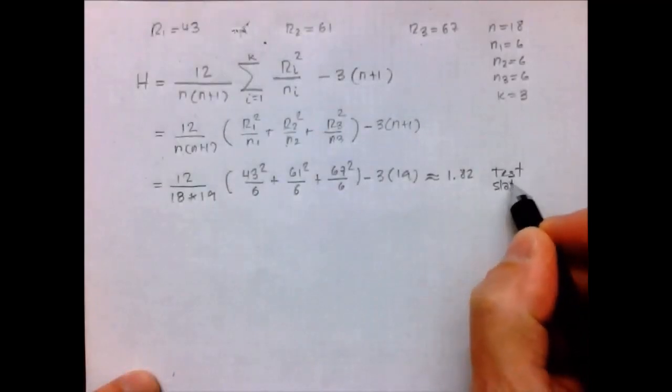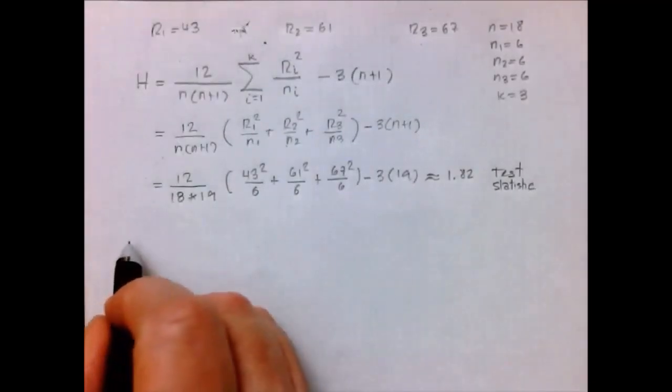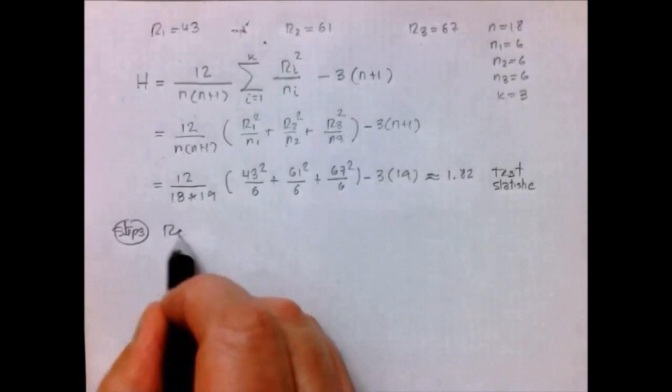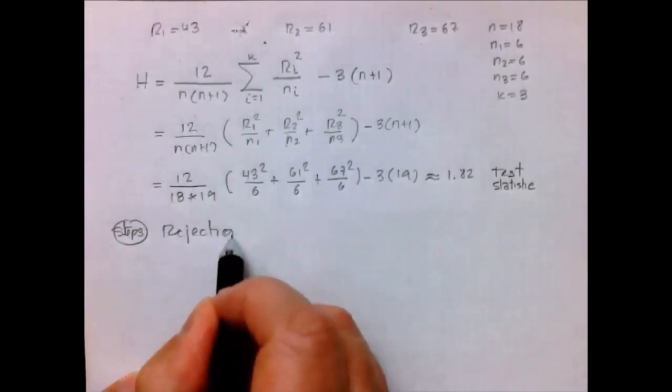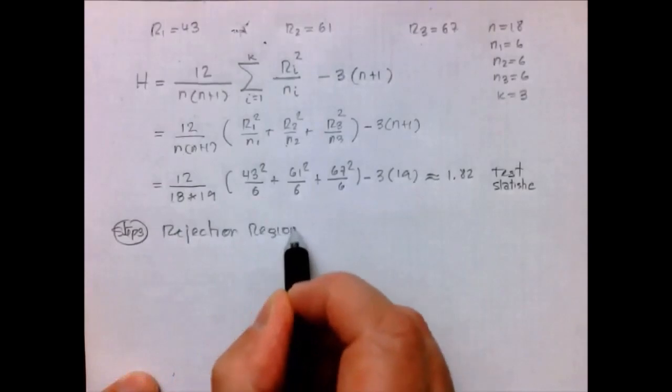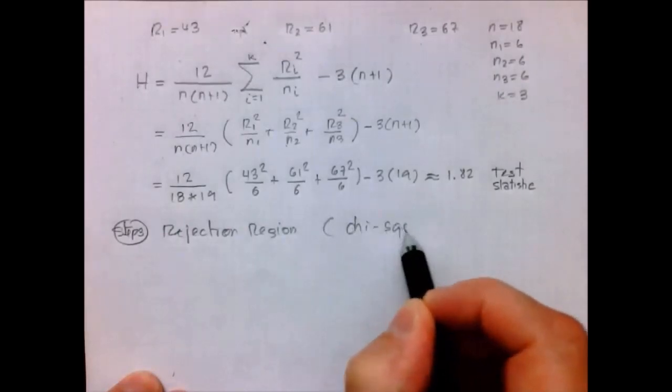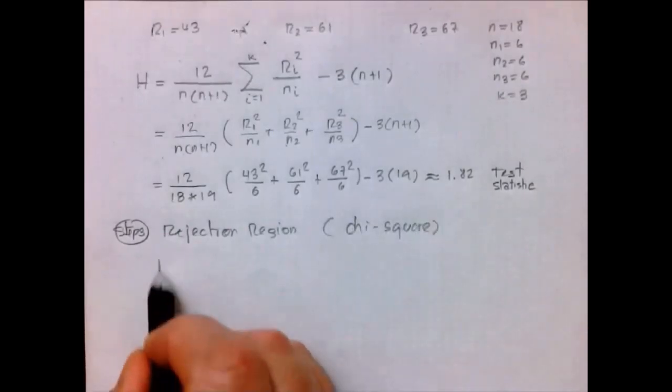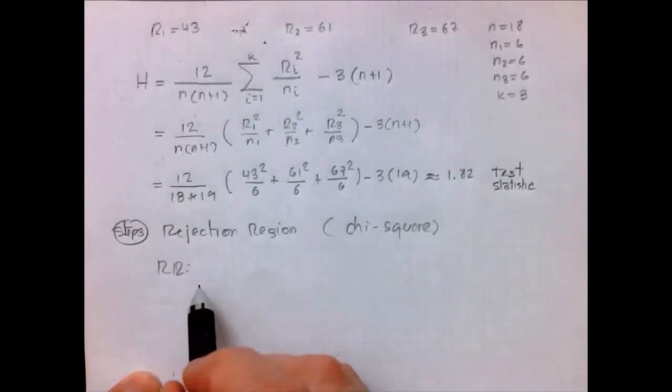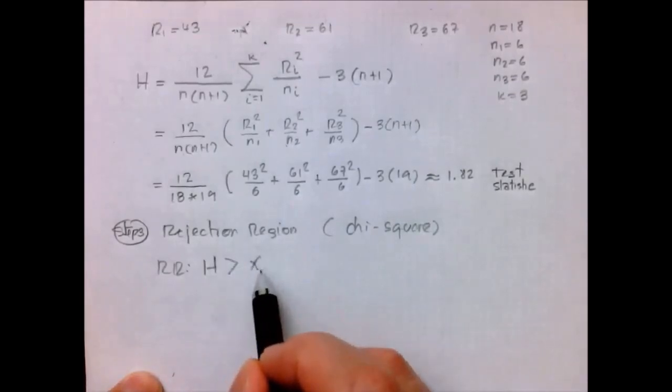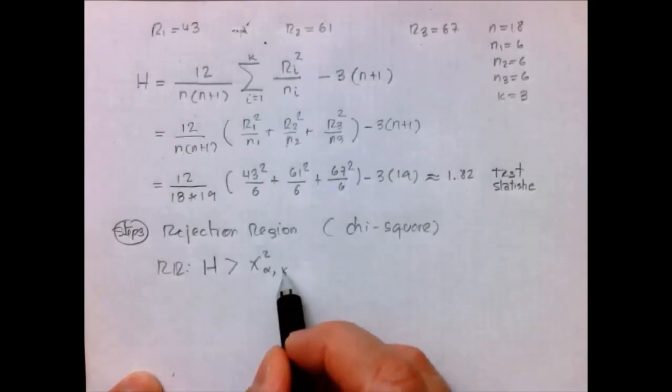The next step, which is step number 3, will be to find the rejection region. And for the Kruskal-Wallis test, we use the chi-square distribution. And the rejection region will be the values of H, our test statistic, that are greater than the chi-square critical value for whatever value of alpha we are using. And the degrees of freedom is going to be k minus 1.